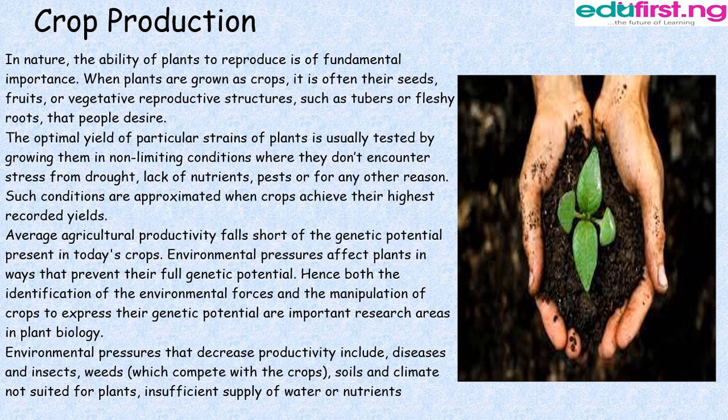Average agricultural productivity falls short of the genetic potential present in today's crops. Environmental pressures affect plants in ways that prevent their full genetic potential. Hence, both the identification of the environmental forces and the manipulation of crops to express their genetic potential are important research areas in plant biology. Environmental pressures that decrease productivity include diseases and insects, weeds which compete with the crops, soils and climate, and insufficient supply of water or nutrients.